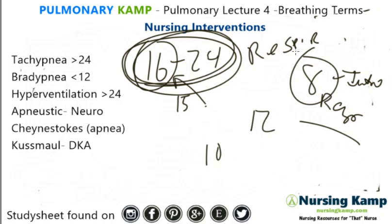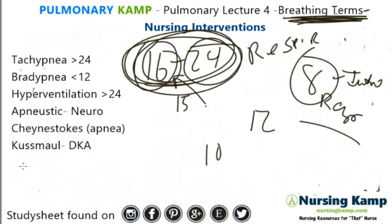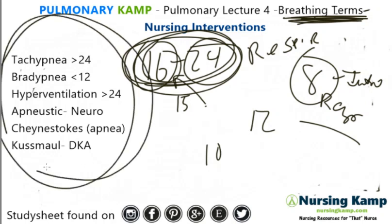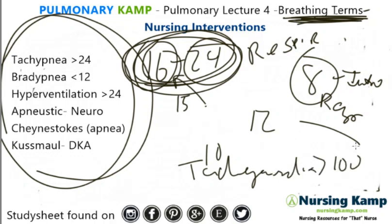Now we're going to talk about breathing terms. Sometimes you don't have the actual numbers, and the symptomology will be expressed as these terms. It's basically like when we say a patient is tachycardic — you need to know what tachycardia means, that it's a heart rate greater than 100, and understand the reasons why a patient will have a high heart rate using the mnemonic from that cardiac lecture.